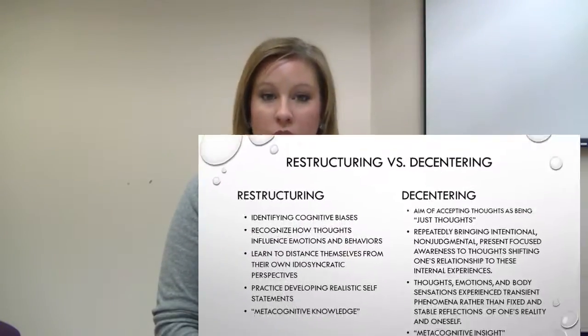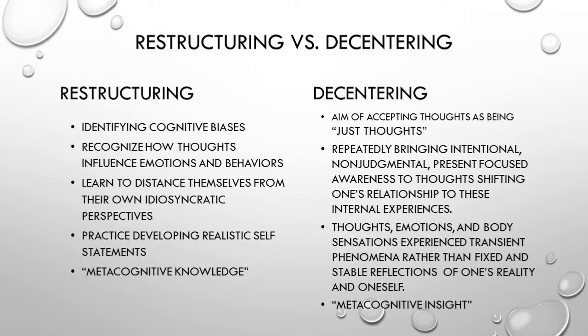In cognitive therapies, you're usually focusing more on restructuring your thoughts. You work with your therapist on identifying maladaptive thoughts, recognizing how those thoughts influence your emotions and behaviors, and developing more positive thoughts — a process known as metacognitive knowledge, which means understanding that a thought is not necessarily accurate. In mindfulness-based cognitive therapy, the focus is more on decentering: observing the experience of thinking with the aim of accepting thoughts as just being thoughts.